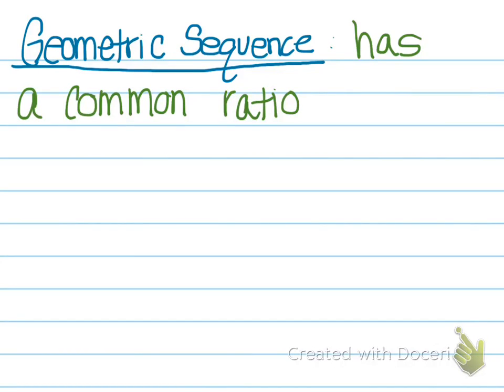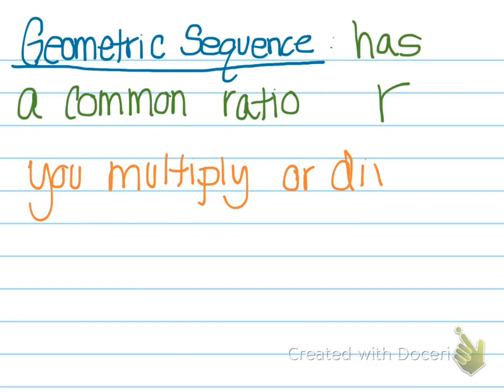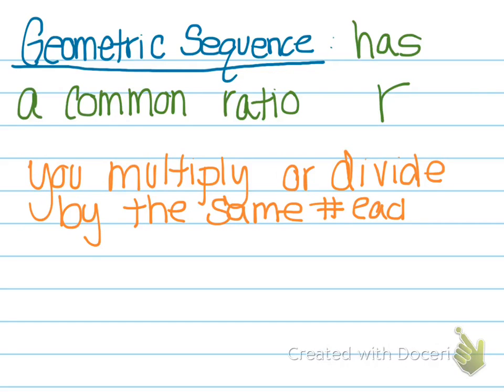A geometric sequence has a common ratio which we designate as r. Basically what this means is you multiply or divide by the same number each time. Whereas arithmetic we would add or subtract, now we're going to multiply or divide.